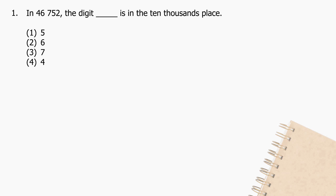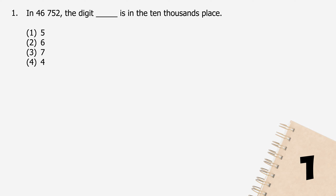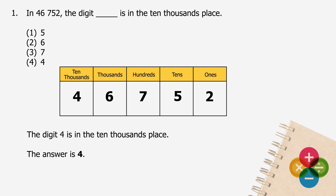Question 1: In 46752, the digit blank is in the ten-thousands place. The digit 4 is in the ten-thousands place. The answer is 4.